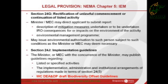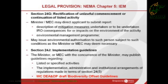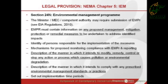Section 24G, which is the rectification of unlawful commencement or continuation of a listed activity, also allows for mitigation measures and may require an EMP. Again, it's at that broad level that biodiversity offsets could come into play. Section 24J talks to implementation guidelines and that the minister or MEC with the concurrence of the minister may publish guidelines. The Western Cape's biodiversity offset guidelines actually refer to this section and are sitting in the queue once concurrence of the minister has been obtained. The EMP requirements are very generic in terms of mitigation, management, protection, and remedial measures — broadly couched and certainly not prohibiting biodiversity offsets.